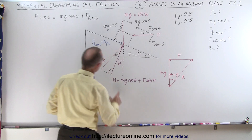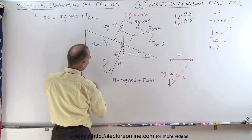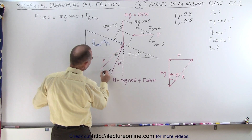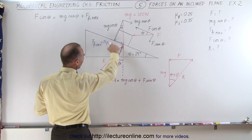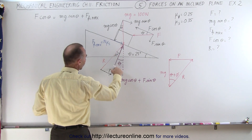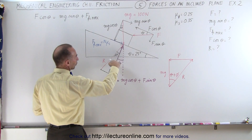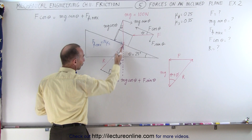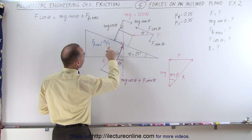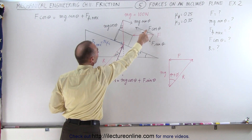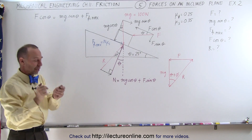We have the reaction force caused by the friction force and the normal force combined. So the reaction force is the vector sum of the normal force pushing back and the friction force that's fighting against the component of the applied force along the surface.